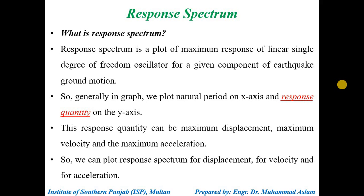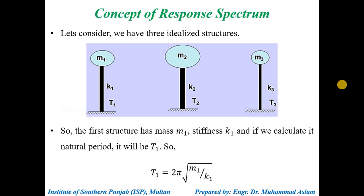Generally in a graph we plot natural time period on the x-axis and response quantity on the y-axis. Response quantity three different categories ke andar consider kiya jata hai. So x-axis ke andar hum natural time period consider karte hain ya natural frequency ko rakhte hain, aur y-axis ke andar hum response rakhte hain. In dono ki jo ek cumulative relationship develop hoti hai, that behavior is known as a response spectrum curve. This response quantity can be maximum displacement, can be maximum velocity, and can be maximum acceleration — yeh teenon cheezein ho sakti hain.